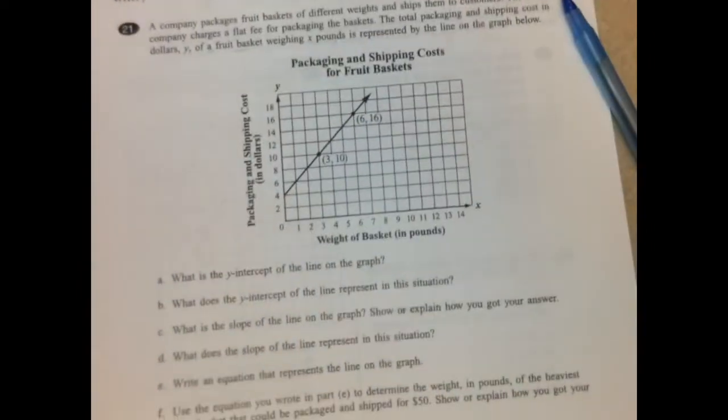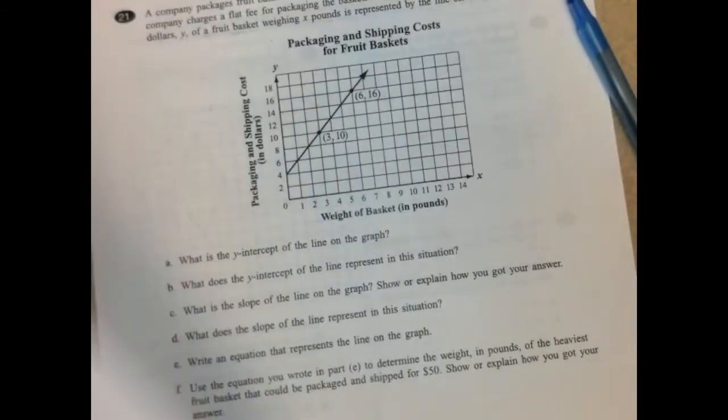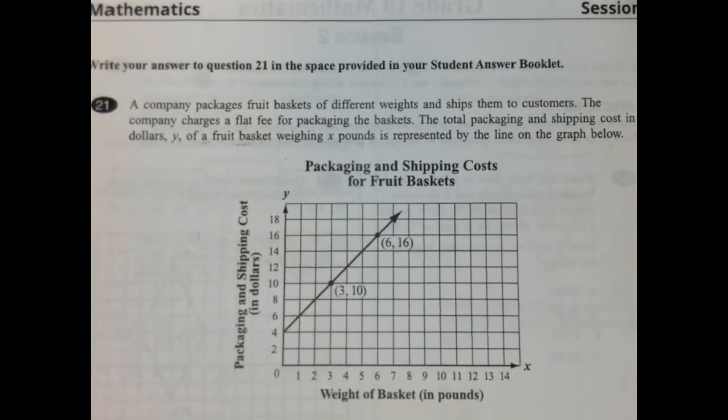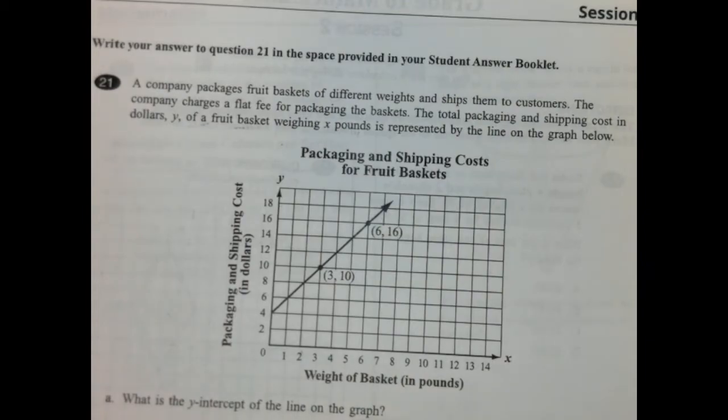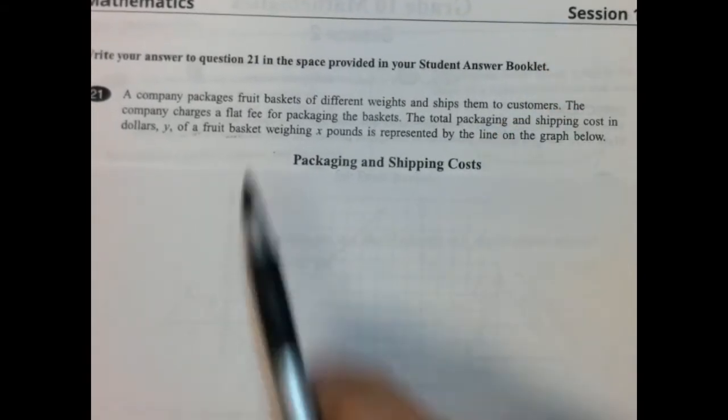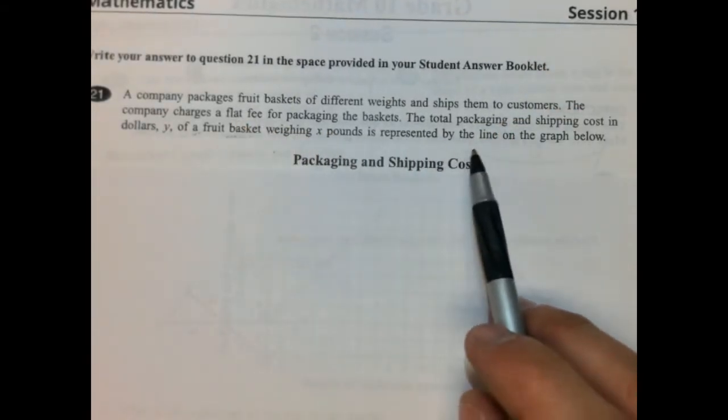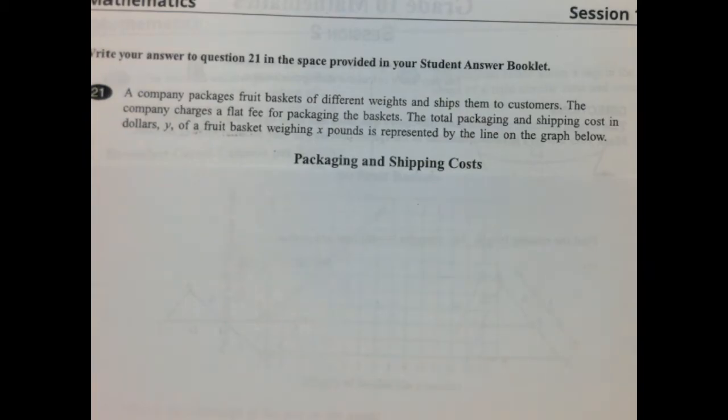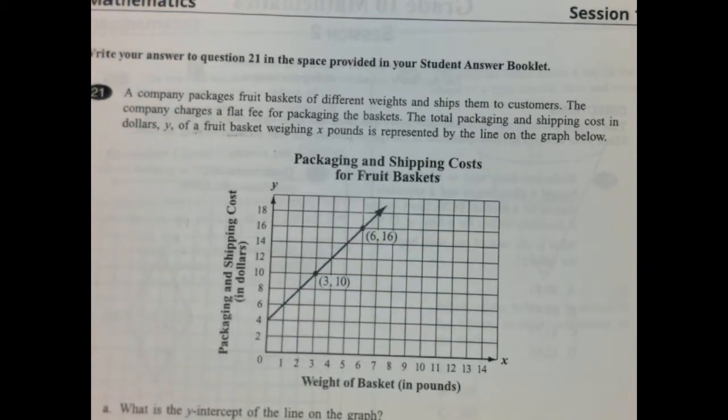I think we have one more. That one is the last one for this session. So we'll finish it off here. That'll be the end of this video. A company packages fruit baskets of different weights and ships them to customers. The company charges a flat fee for packaging the baskets. Total packaging and shipping cost in dollars Y of a fruit basket weighing X pounds is represented by the line on the graph below. Okay. So here's the weight, and here is the cost. Okay. So obviously there's a correlation here.